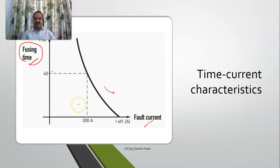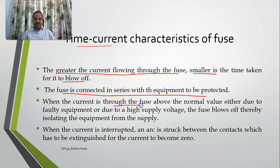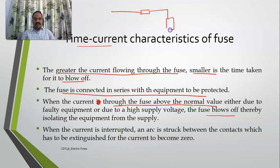The characteristic is inverse — that's why we call it the inverse time-current characteristic. For lower values of fault currents it may take some time, but for higher values it reacts immediately. For normal current, the time might be infinite, meaning it will not trip. The greater the current flowing through the fuse, the smaller the time taken. The fuse is always connected in series with the equipment, so when current exceeds normal — due to faulty equipment or a sudden voltage surge — the fuse blows off, isolating the equipment.